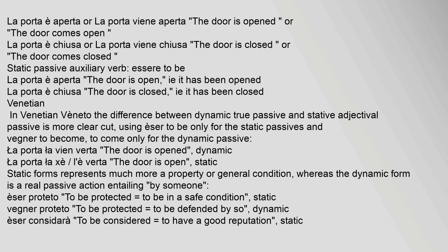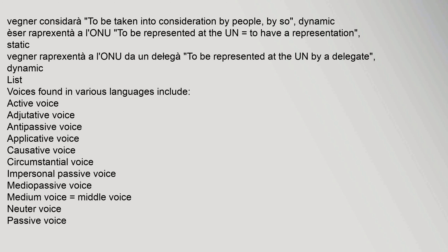In Venetian (Veneto), the difference between dynamic (true passive) and stative (adjectival passive) is more clear-cut: "ser" (to be) is used only for static passives, and "vegner" (to become/to come) only for the dynamic passive. For example: "La porta la vien verta" (The door is opened — dynamic) vs. "La porta la è verta" (The door is open — static). Static forms represent a property or general condition, whereas dynamic forms represent a real passive action. For example: "Esser proteto" (To be protected = to be in a safe condition — static) vs. "Vegner proteto" (To be protected = to be defended by someone — dynamic).